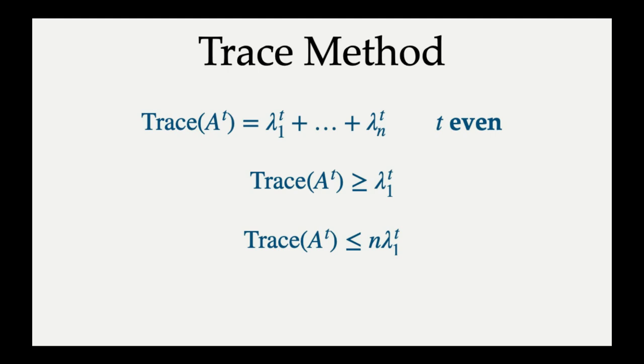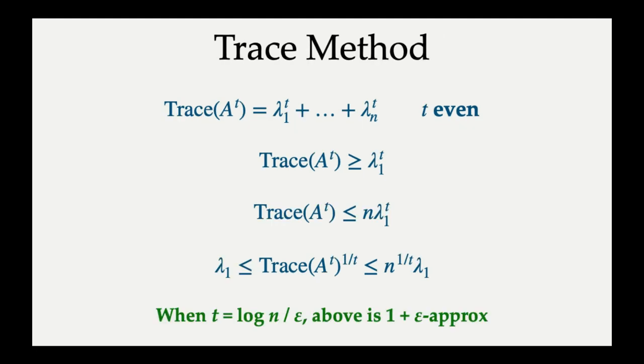So the sum of n positive numbers is at least the maximum of these positive numbers, which is recorded in the inequality trace(A^t) ≥ λ₁^t. And actually the trace of A^t is at most if you replaced every summand with the maximum, so the trace of A^t is going to be at most n × λ₁^t. And with these two inequalities in hand, we actually know that if we take this trace quantity and then raise it to the power 1/t, you actually get a very good approximation of λ₁ if you choose t to be appropriately large. Namely, this quantity is sandwiched between the maximum eigenvalue and just a small number which is n^(1/t) times the maximum eigenvalue. And by choosing t large enough, you can make n^(1/t) as small as you want.